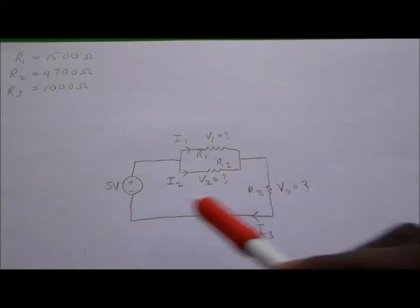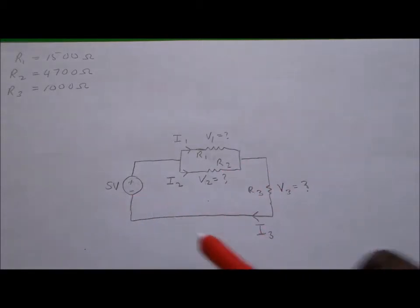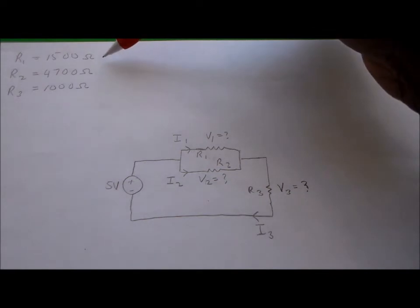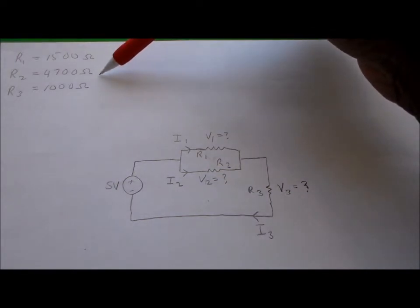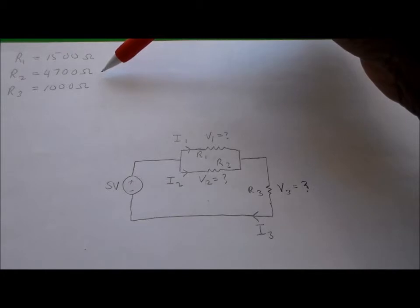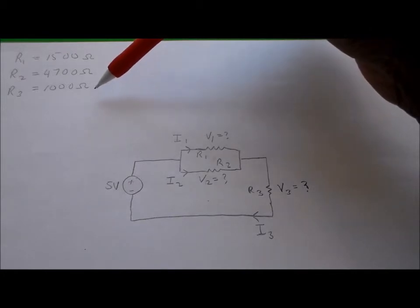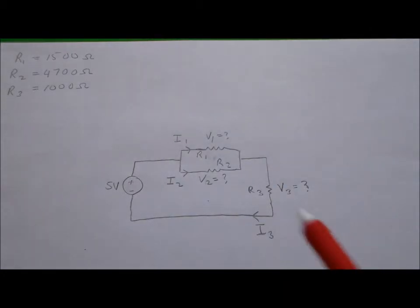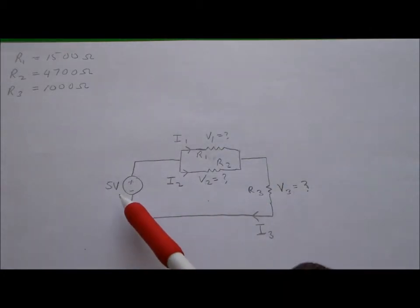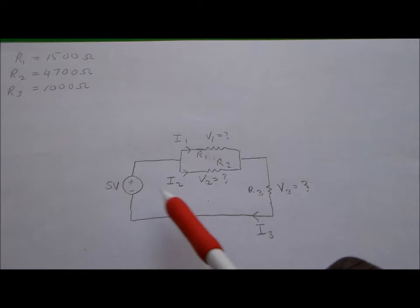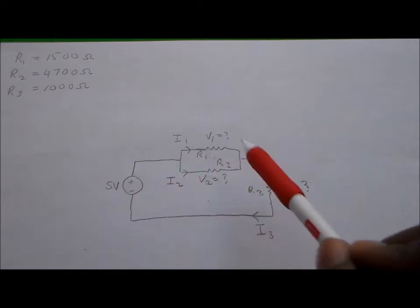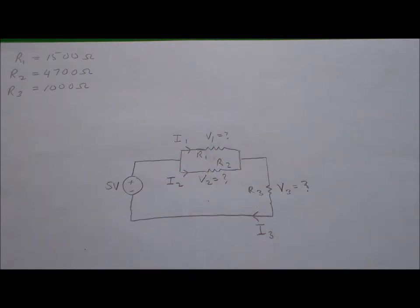In the circuit, we have three resistors. Resistor number one is a 1500 ohm resistor, resistor number two is a 4700 ohm resistor, and resistor number three is a 1000 ohm resistor. We also have a 5 volt voltage source which will be powering this circuit.